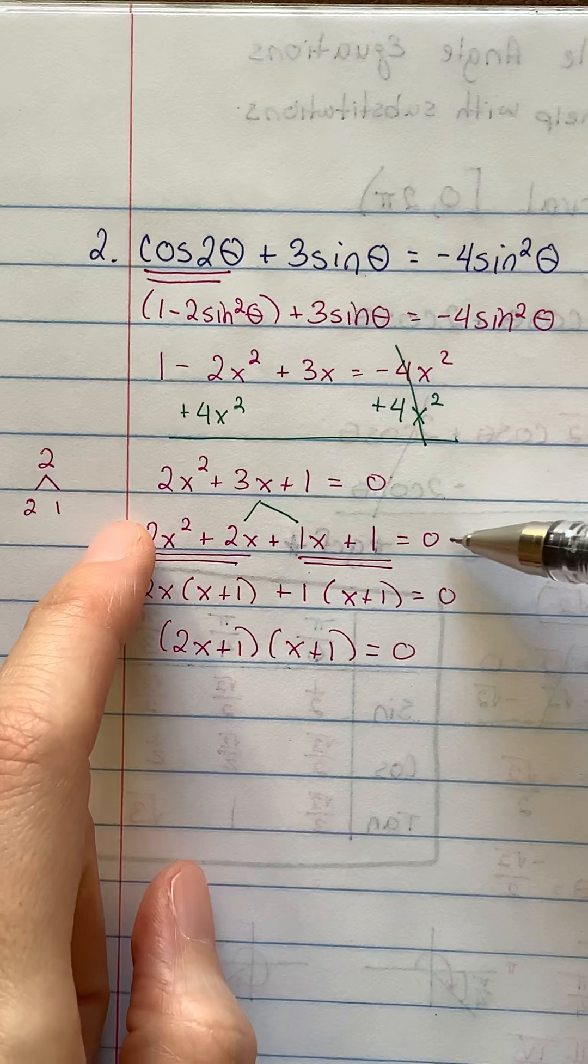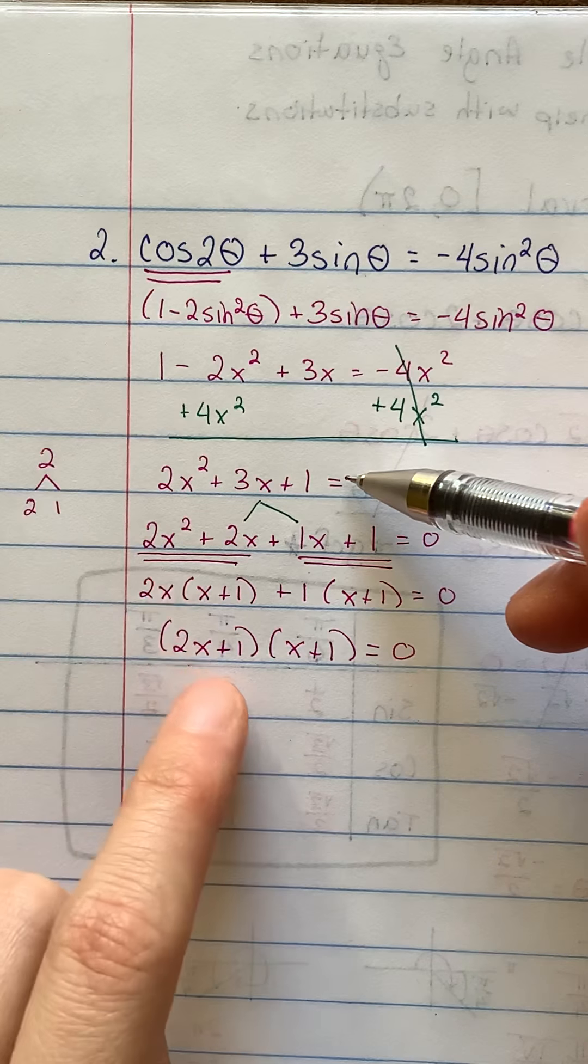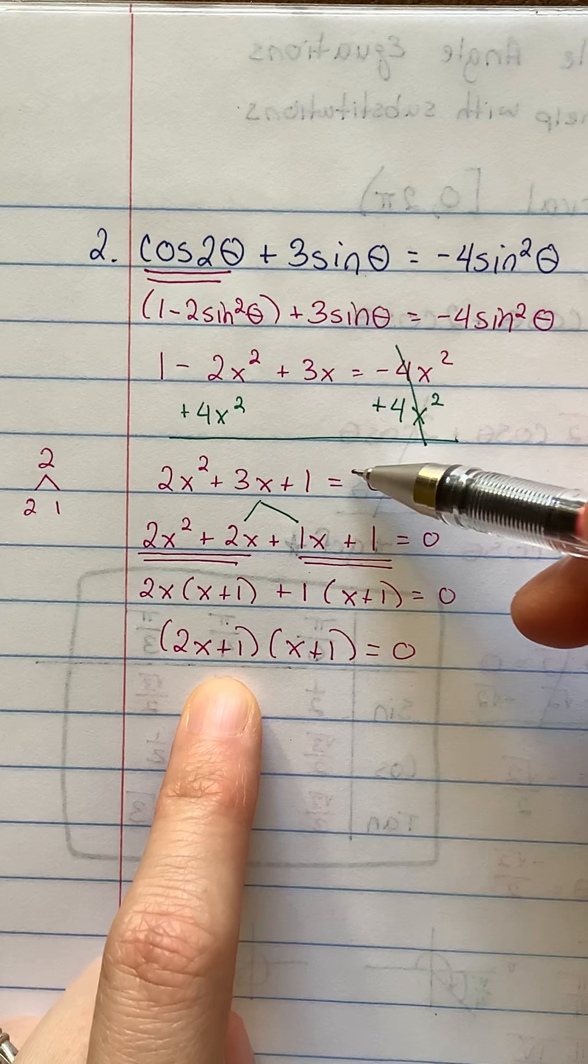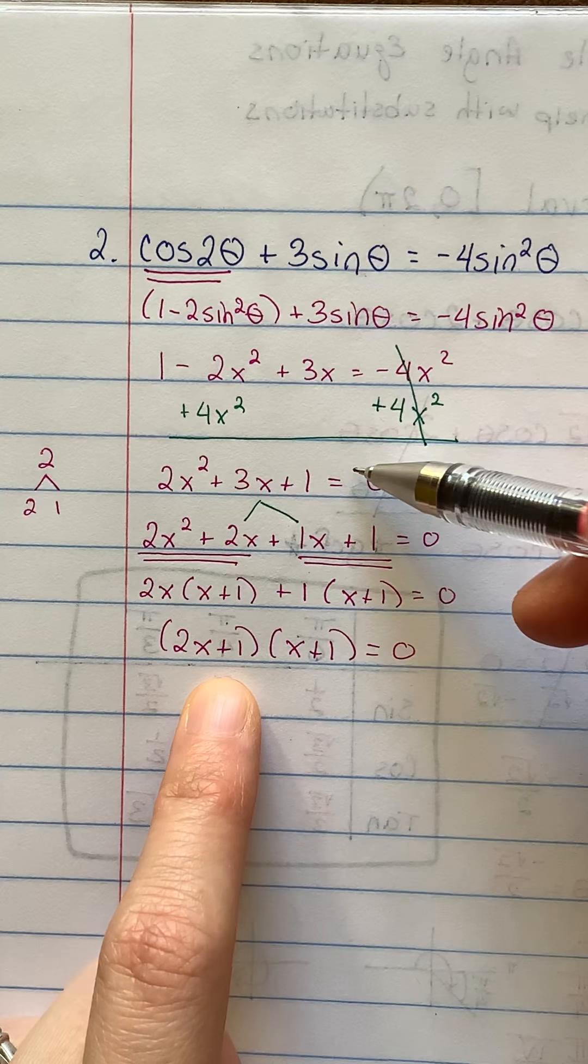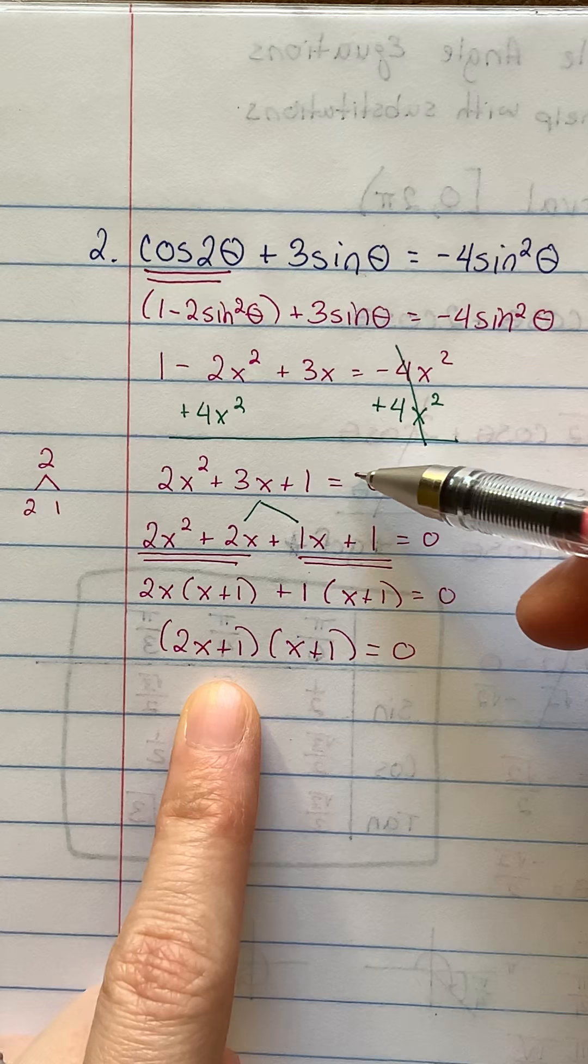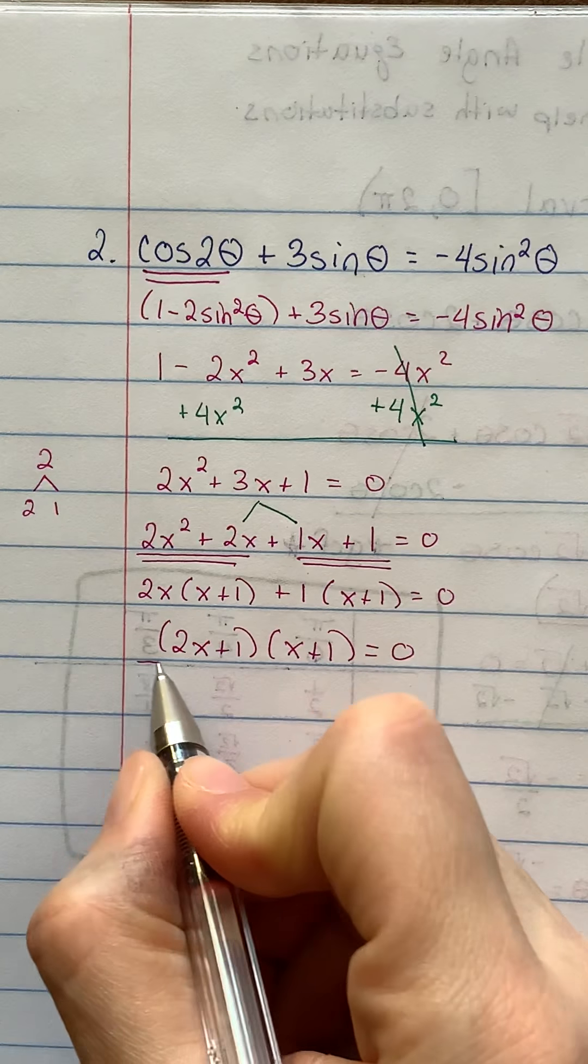Again, this is called split the middle followed by grouping. Then you take the two GCFs, put those together. 2x plus 1 times x plus 1. Again, if you want to skip these two middle steps and just go straight from the trinomial to these two binomials, that's perfectly fine. I just wanted to show you split the middle once and I thought, hey, why not take advantage of the fact that I'm recording this?